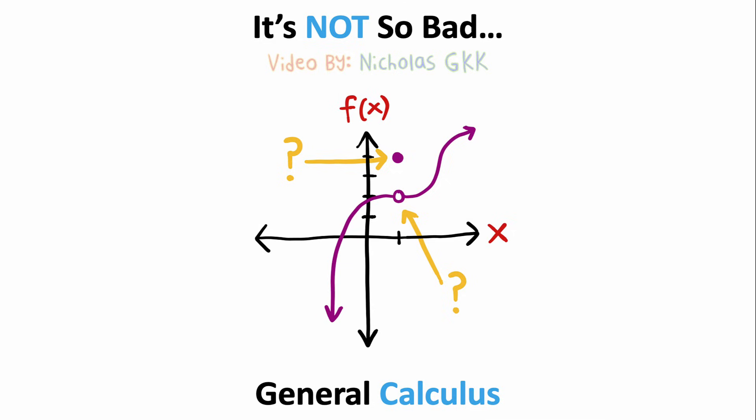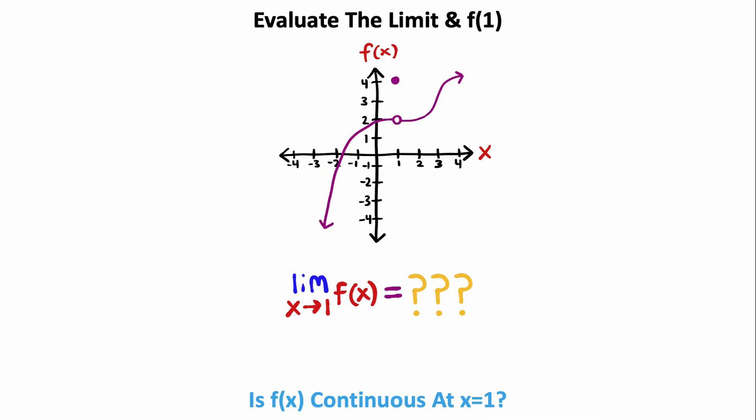This calculus problem looks complicated at first, but it's really not too bad. So in this problem, we are given the graph of a function, and we are asked if this function is continuous at x equals 1. Our first step is going to be to find the limit of our function as x approaches 1. I can see that an x value of 1 is right there, so if I start on our curve from the left side, I can approach this value of x equals 1, and I end up at an output of 2.